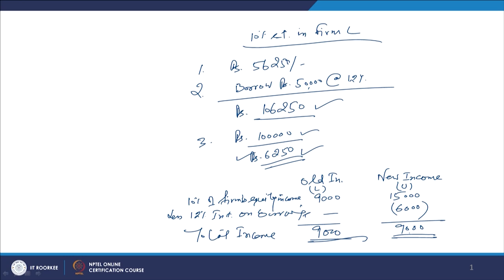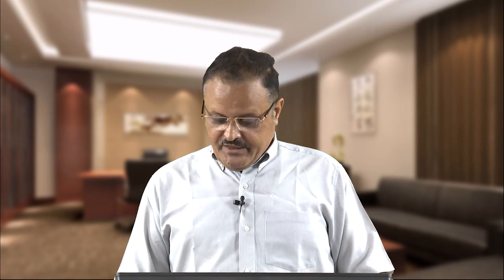By investing 6,250 less, the investor ends up with the same income of 9,000 rupees. He still has 6,250 rupees surplus that he can invest elsewhere in the market, earning additional income — say 200 rupees — making his total income 9,200 versus 9,000 in firm L. This arbitrage will continue to happen until the market values of both firms become equal, because only then is the possibility of earning higher income for the same level of investment and leverage eliminated.